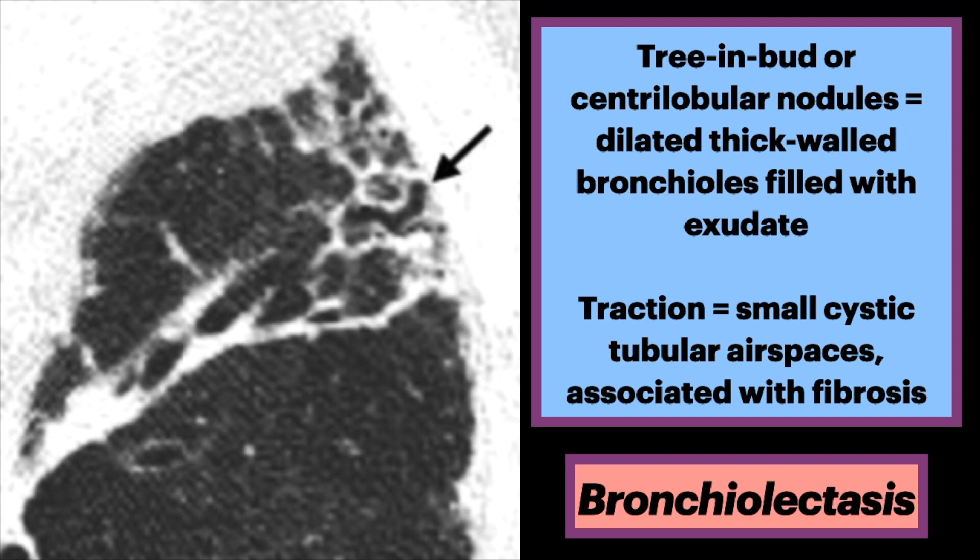In traction bronchiolectasis, the dilated bronchioles are seen as small cystic tubular airspaces associated with CT findings of fibrosis.